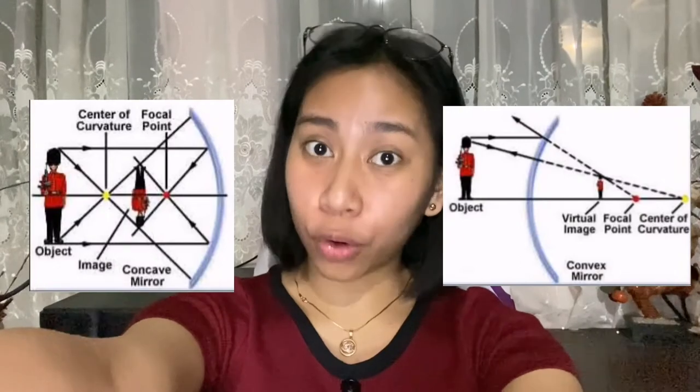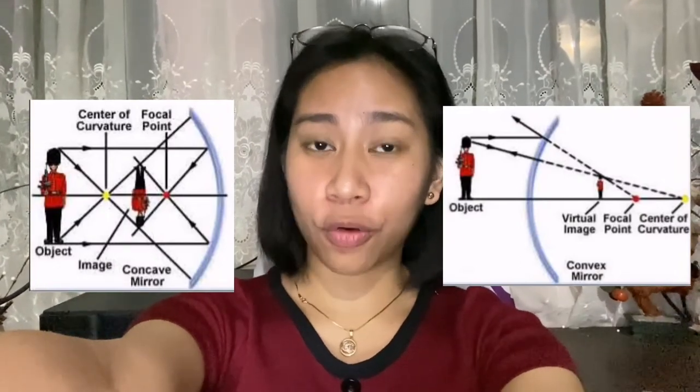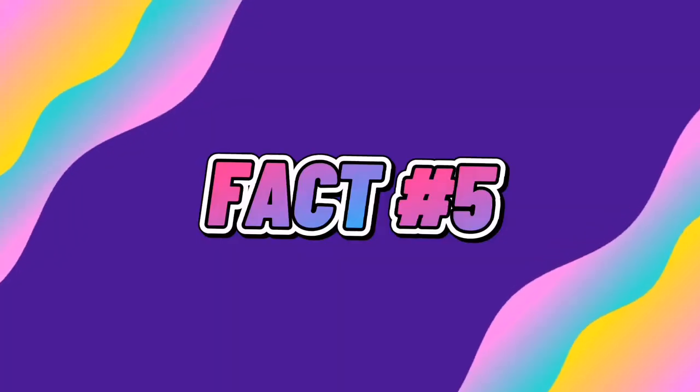Fact number four. A more interesting reflection is found in a concave mirror. When you look at yourself in it, your reflection will appear to be upside down. This is because the light is bent inward and it crosses over itself. Fact number five: the only way that we can see an object that does not emit light is when that object reflects light.